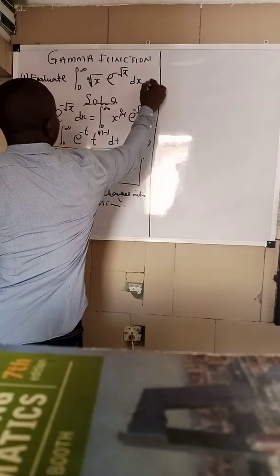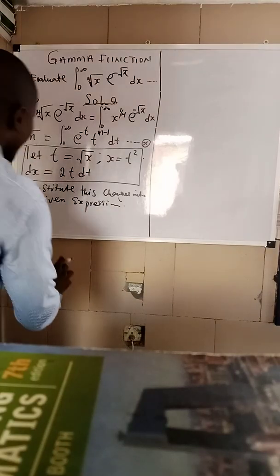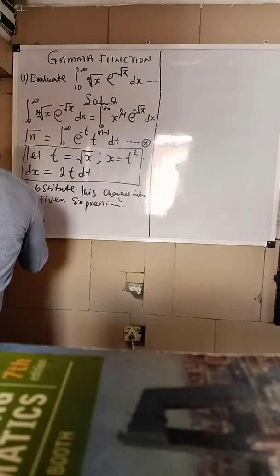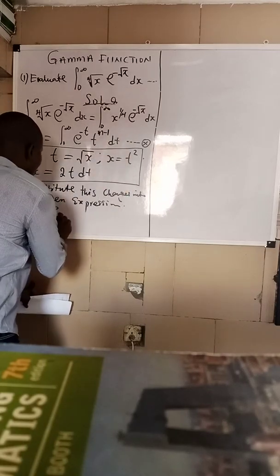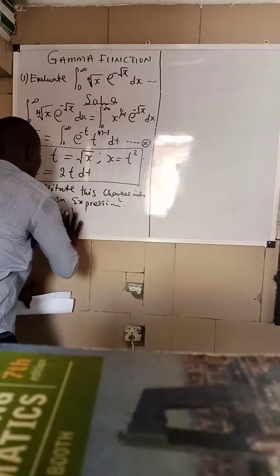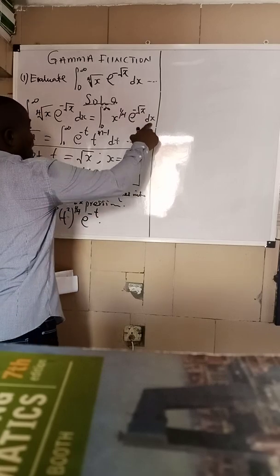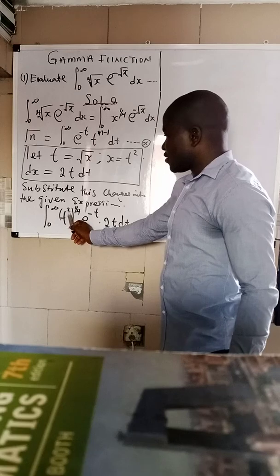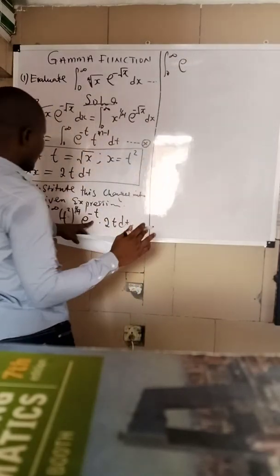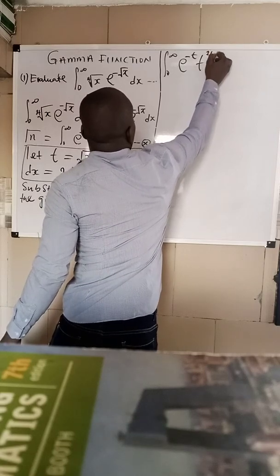We are going to substitute these changes into the given expression. Substituting, anywhere we see x we replace it with t squared. So we have integral zero to infinity of t squared raised to the power one over four, times exponential minus t (since t equals root x), times dx which is 2t dt. Applying the power law of indices, the outside power multiplies the inside power.